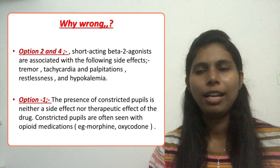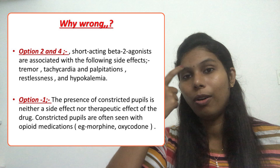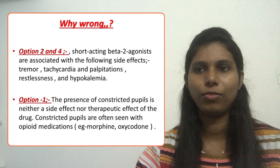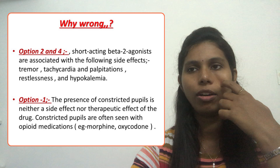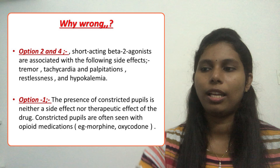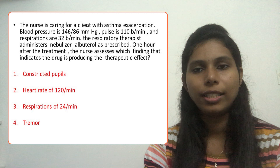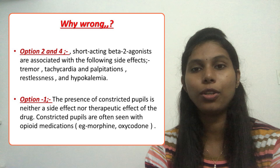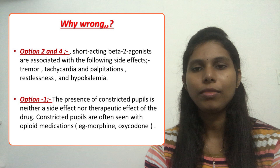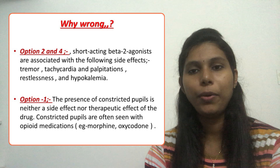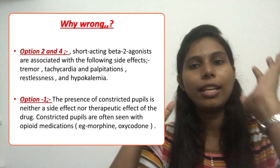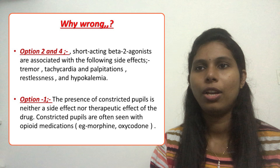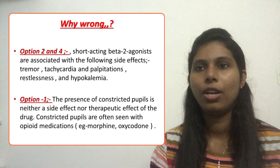Now, why are the other options incorrect? Constricted pupils are not a side effect or expected effect of albuterol — this is typically seen with opioid medications like morphine or oxycodone, so we eliminate that. Heart rate of 120 is worse than before — it was 110 and increased to 120. Tachycardia is actually a side effect of albuterol, not a therapeutic effect. Tremor is also a side effect of albuterol. So we need to know the therapeutic effects versus the side effects to correctly identify the right answer.